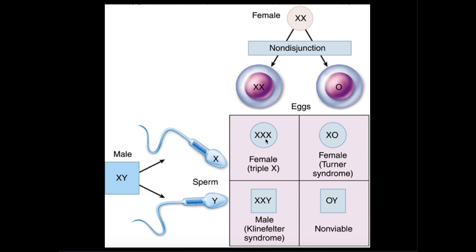Notice that XXX, because it does not have a Y chromosome, this individual would be female. Now let's look at the opposite non-disjunction case, where the secondary oocyte didn't receive any X chromosomes — the X chromosomes all went to the polar body. If we cross this secondary oocyte with an X chromosome from the sperm cell, the genotype would just be X. This O is a placeholder meaning there's no other sex chromosome. This is what's called Turner syndrome, and since there's no Y chromosome, this individual would be female.